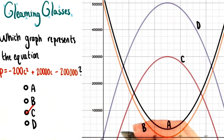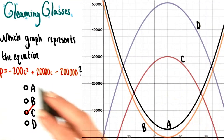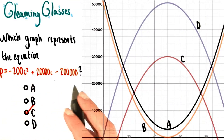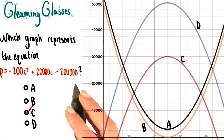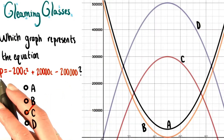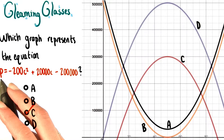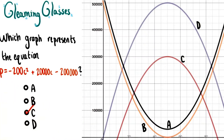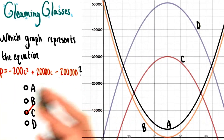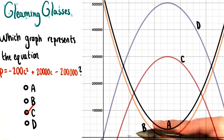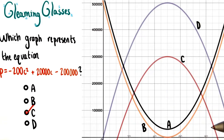The answer is C, this red curve. To figure this out, we could plug a few values for C into our equation and find the corresponding values for P. Those C and P values will be the coordinates of points on this graph.